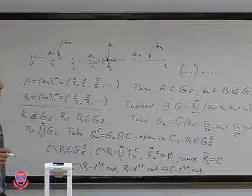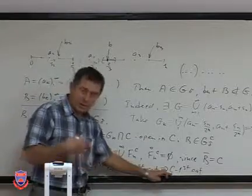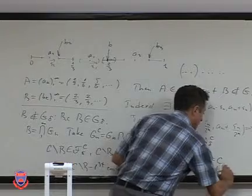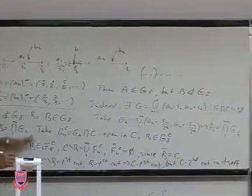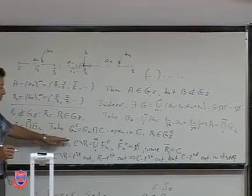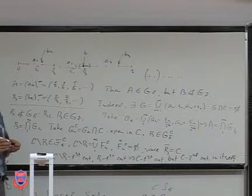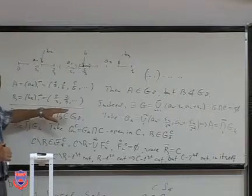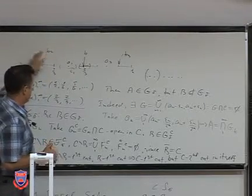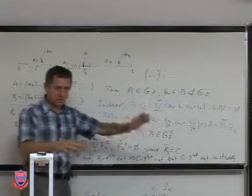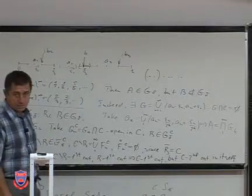Since B is dense in C but lies in the complement, the interior is empty. Therefore C minus B is of the first category in C. Now B is itself of the first category since it is a sequence — any sequence is first category. Therefore C would be of the first category in itself. But the Cantor set is of the second category in itself, which is a contradiction. This is how we reduce to Baire theory — not on the line, but on the complete set C.